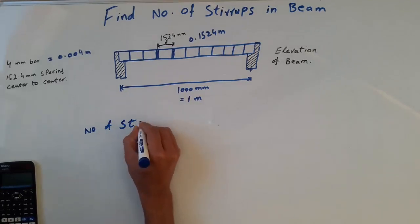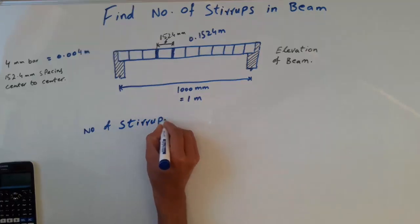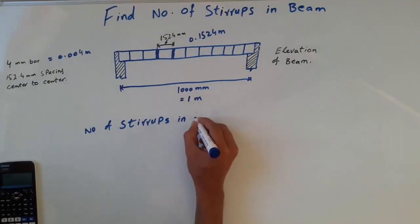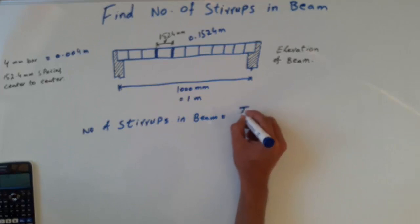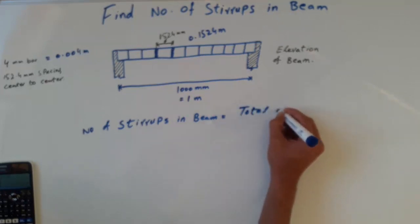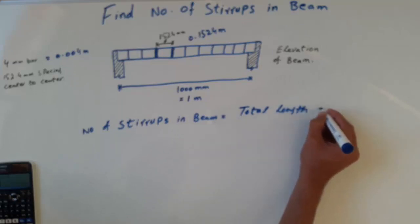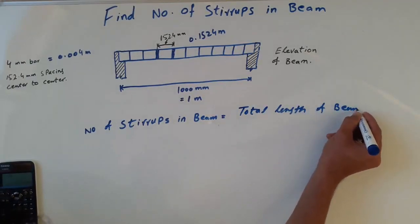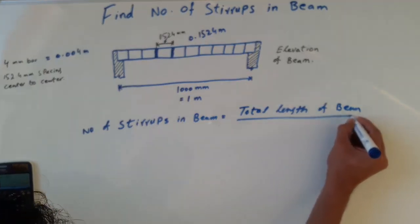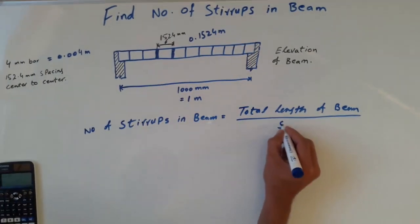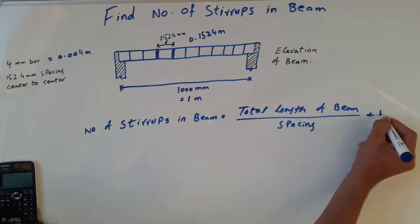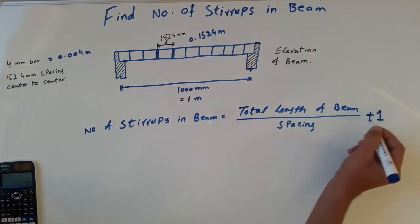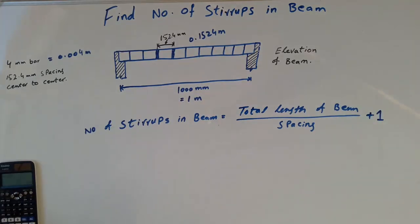Number of stirrups in a beam equals total length of beam divided by spacing, plus one. This is the standard formula to calculate stirrups in a beam.